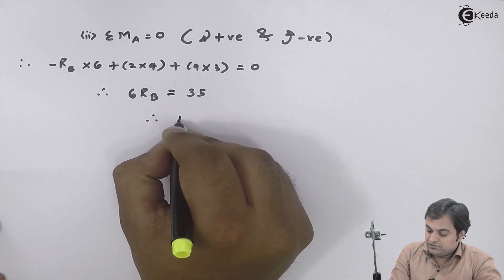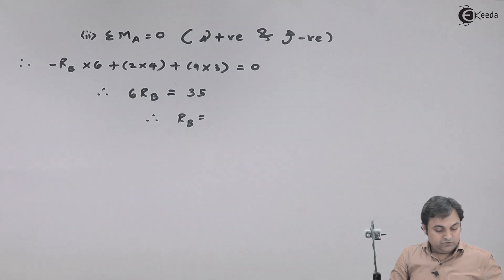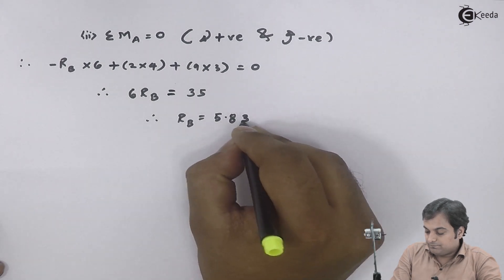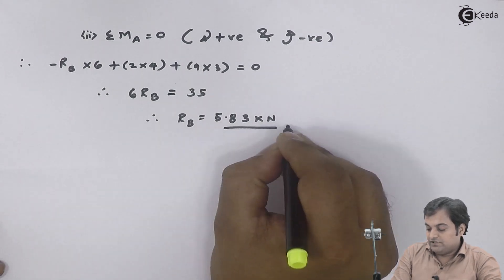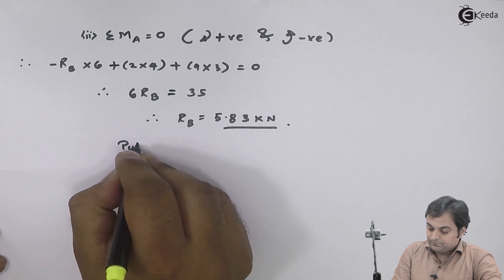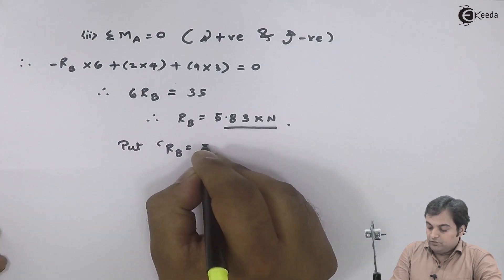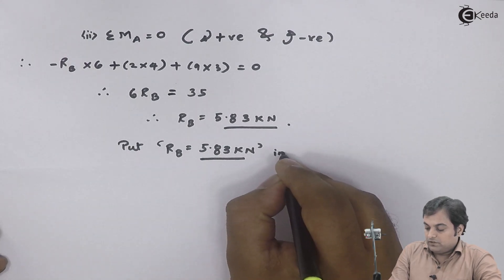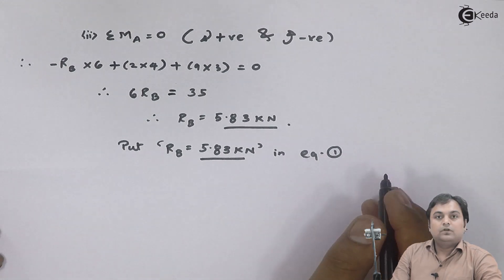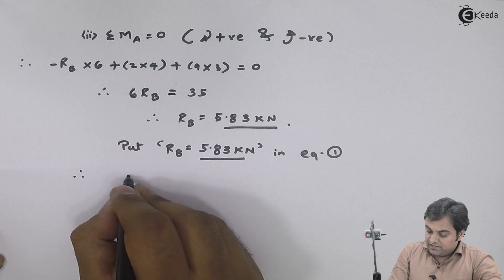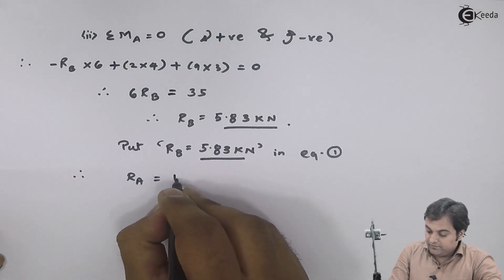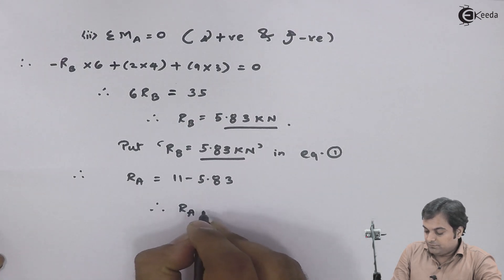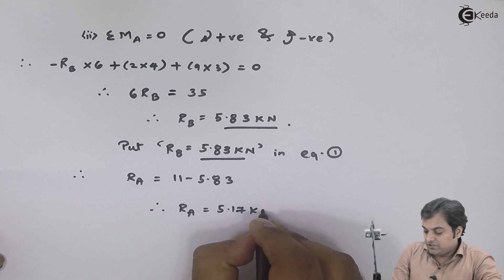Solving: 6 × RB = 8 + 27 = 35, giving RB = 5.83 kilonewton. Substituting RB into equation one: RA = 11 − 5.83, so RA = 5.17 kilonewton. The support reactions have been calculated.